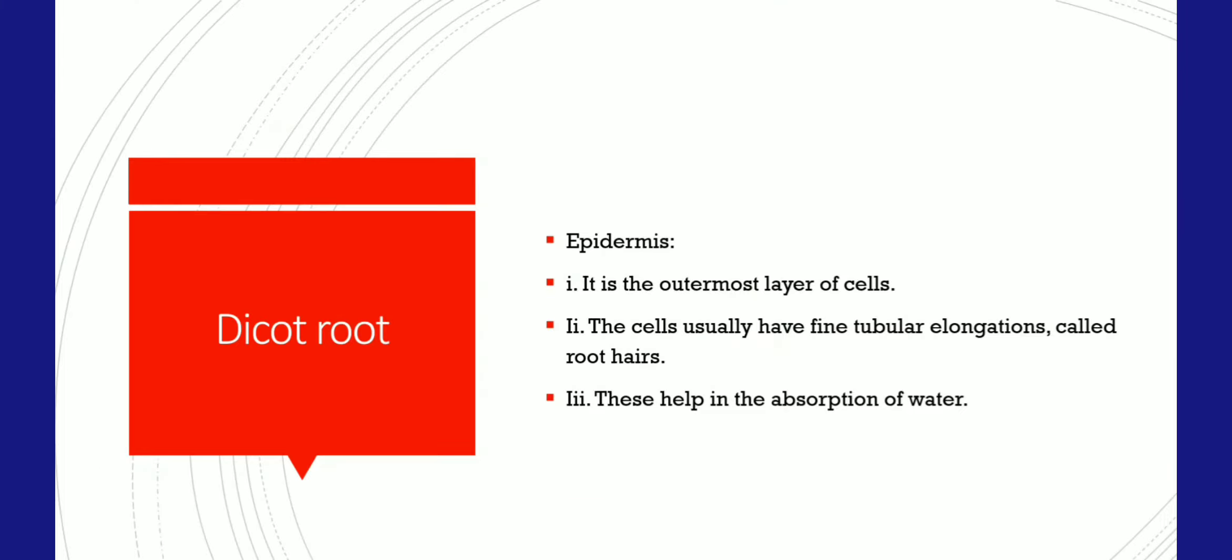Epidermis is the outermost layer of cells. The cells usually have fine tubular elongations without spaces called root hairs. These root hairs help in the absorption of water from the soil along with minerals.